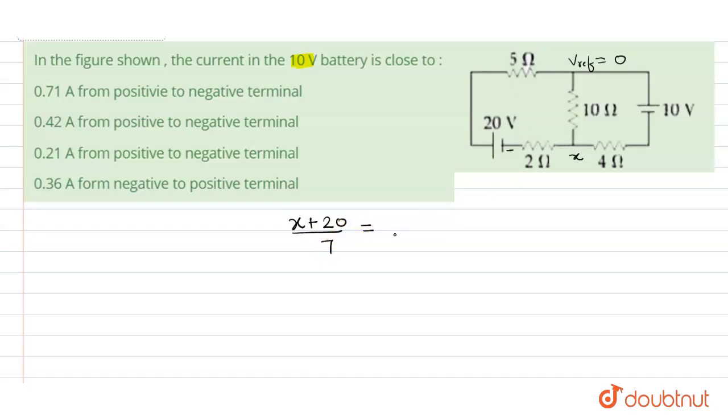For this branch, x minus 0 that will be x upon 10. And this value will become x plus 10 upon 4 ohm.